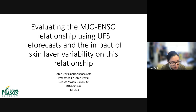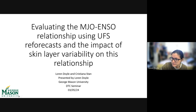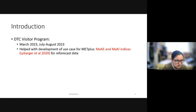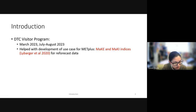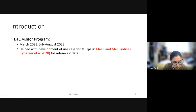This presentation is titled 'Evaluating the MJO-ENSO Relationship Using UFS Reforecasts and the Impact of Scheme Variability on this Relationship.' My name is Lauren Doyle. I'm graduating with a master's in climate science with concentration in climate modeling from George Mason this spring. My advisor is Christina Stan. I participated in the DTC visitor program last year with two visits, one in spring 2023 and the other in summer. I assisted with the development of a use case for METPlus in which the MEC and MECI indices can be applied to reforecast data. The base code of that use case is what I'm using for my thesis.